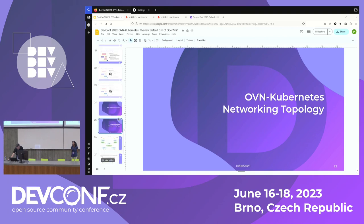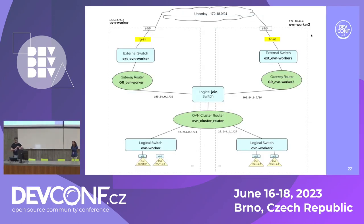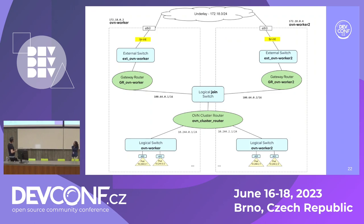Let's get back to the slides and talk about how we represent a cluster in OVN. The cluster is represented with a bunch of switches and routers. The dotted boxes represent every node in the cluster. Up top you can see the underlay network — the network that allows us to connect nodes and provide external connectivity — which is not something we configure; it's provided to us.